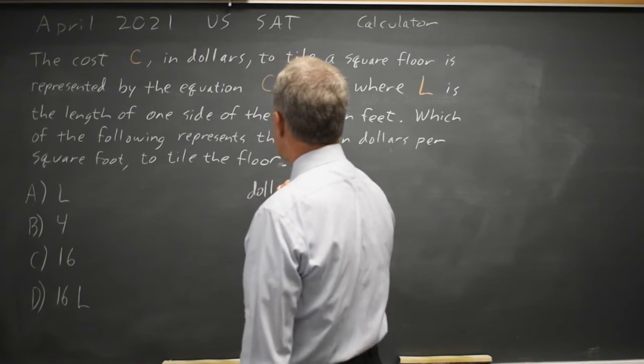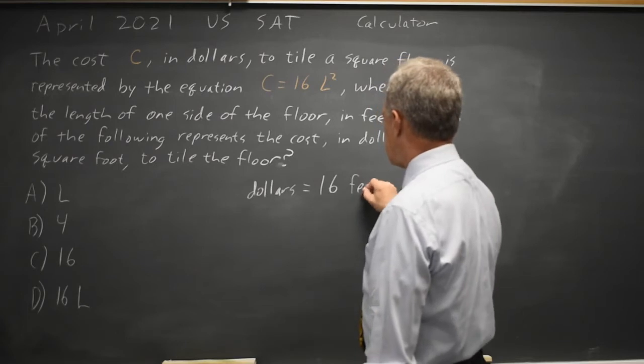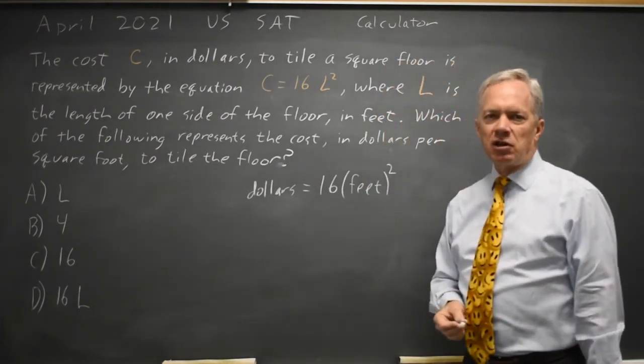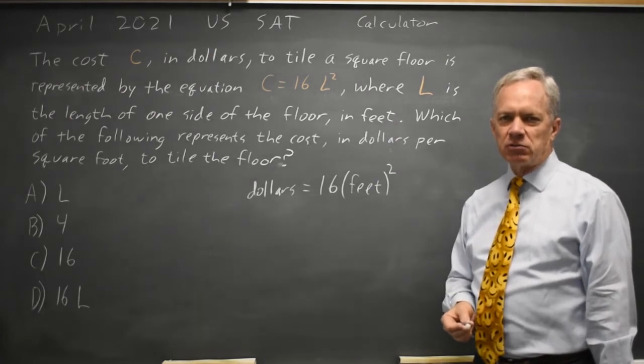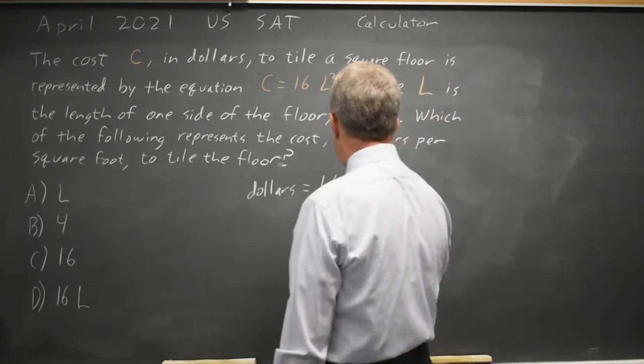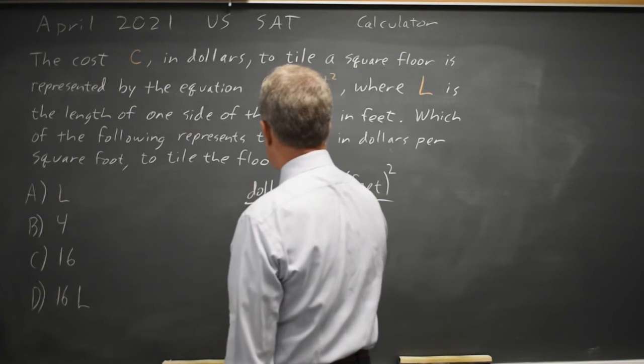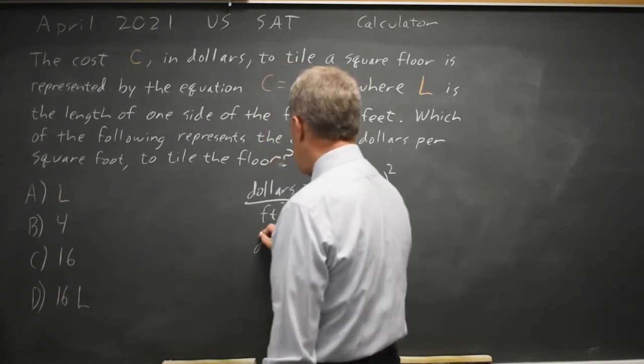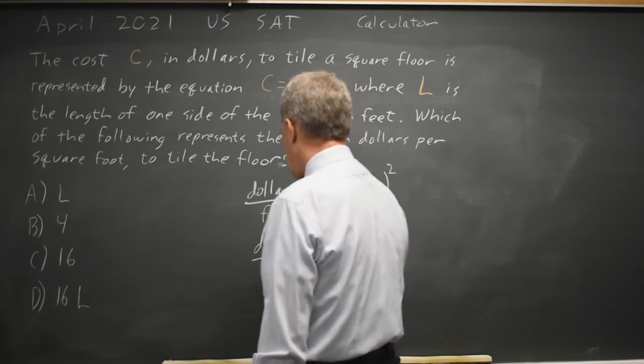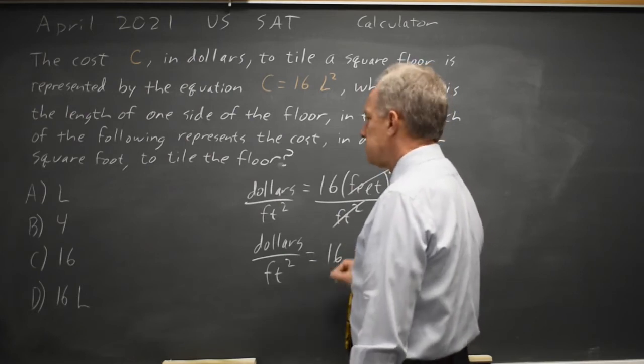L is feet, and we're looking for dollars per square foot where you recall per means divide by. So if I divide by square feet, I'll get dollars per square feet equals, square feet cancels, 16.